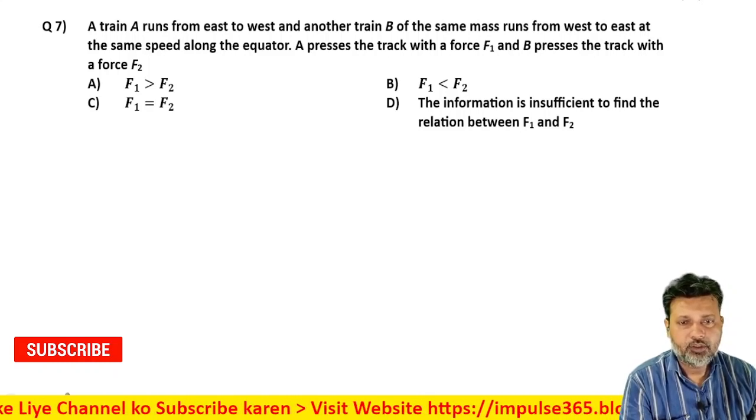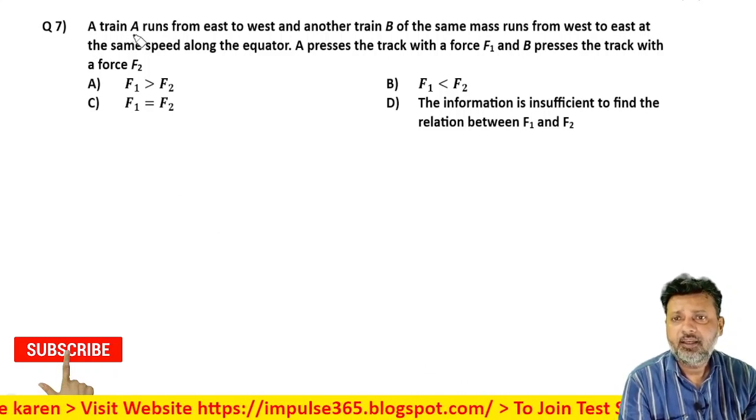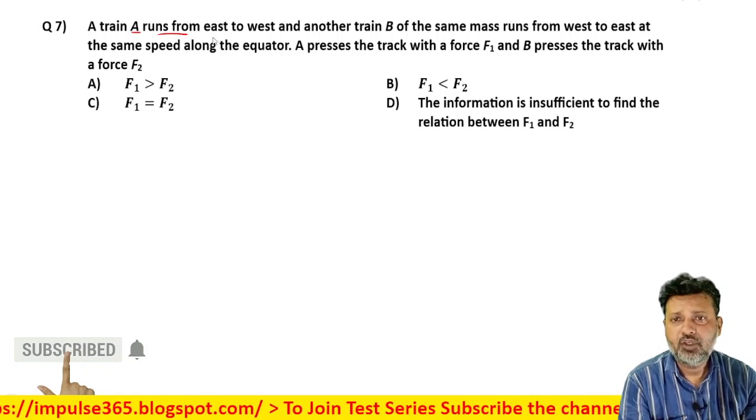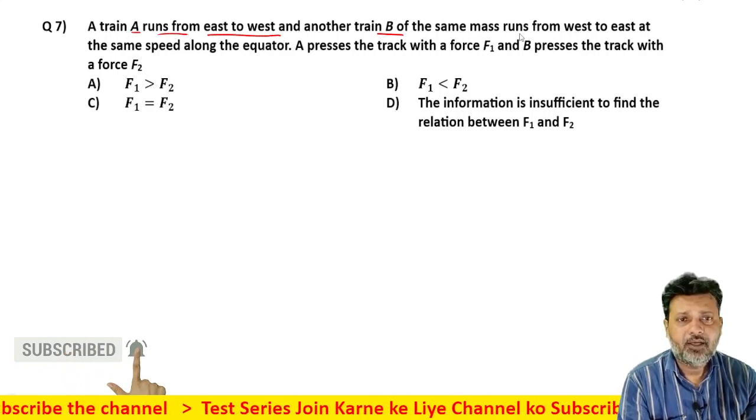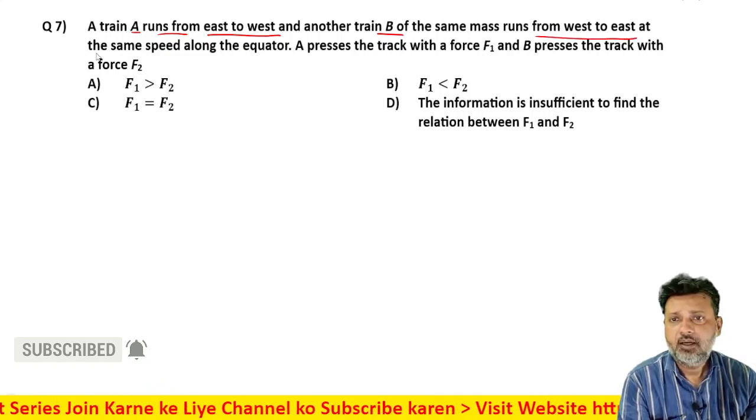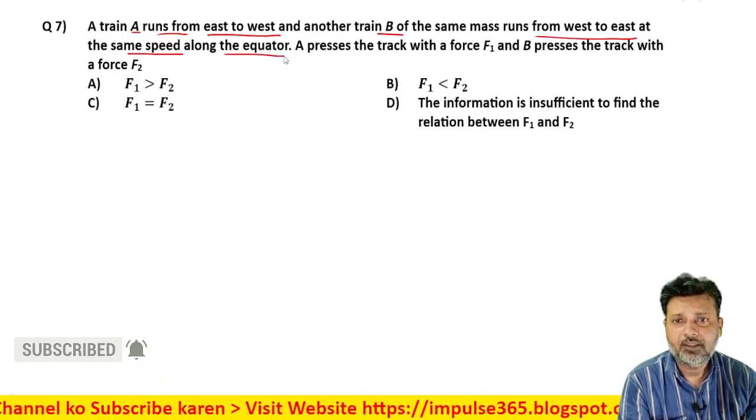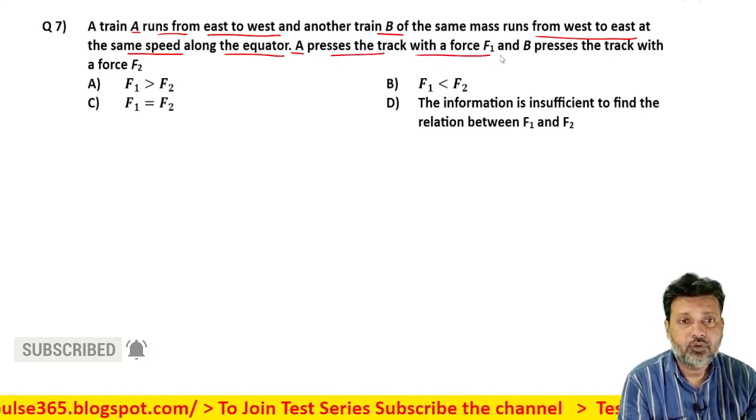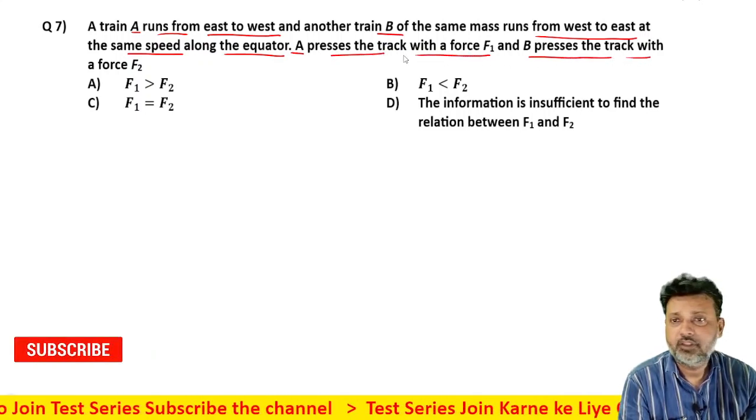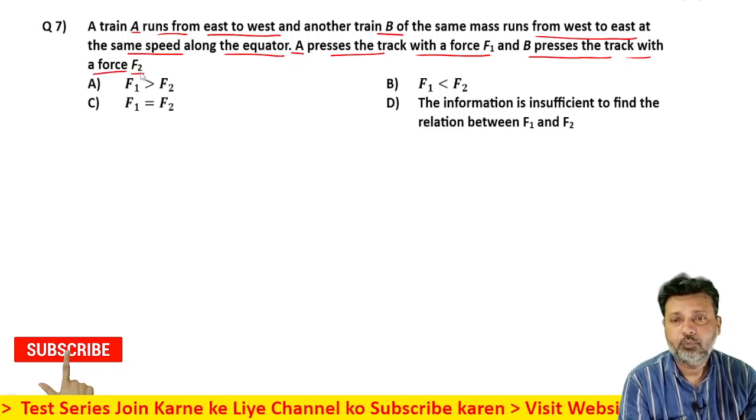Hello, next question. Question read: A train A runs from east to west and another train B of the same mass runs from west to east at the same speed along the equator. A presses the track with force F1, B presses the track with force F2.